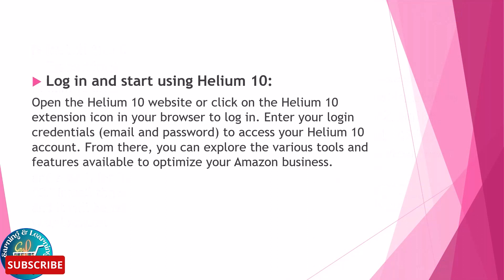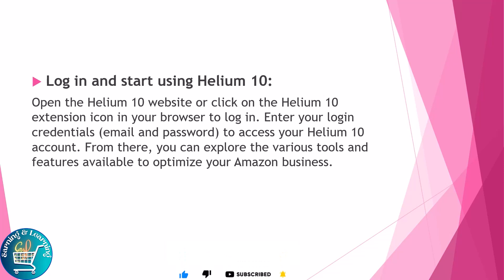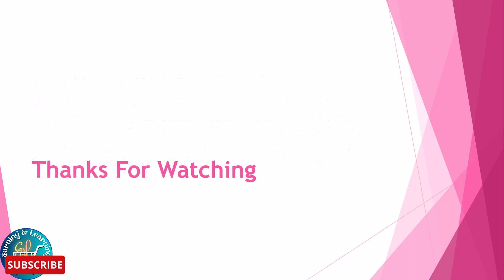Open the Helium 10 website and click on the Helium 10 extension icon in your browser to log in. Enter your login credentials — email and password — to access your Helium 10 account. From there, you can explore the various tools and features available to optimize your Amazon business.